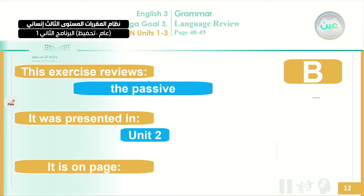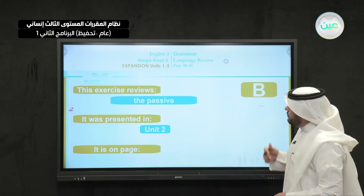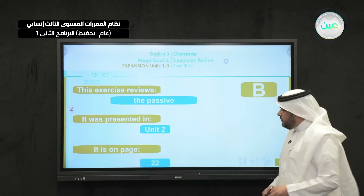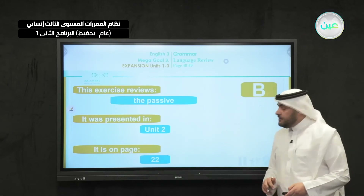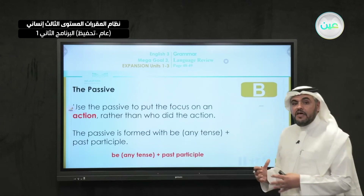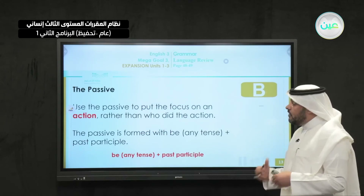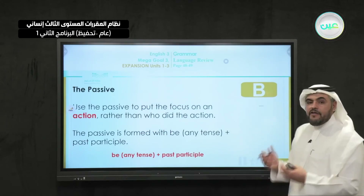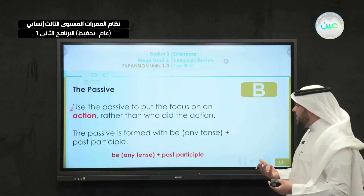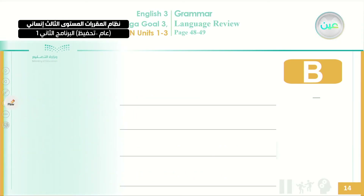Now we're talking about the passive form — how to use it, which will be in exercise B on page 48. The passive form was studied in unit two on page 22. When you want to talk about something and concentrate more on the action rather than who did the action, we use the passive form. We form the passive form with be and the past participle form.